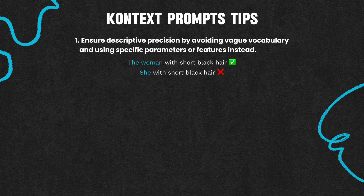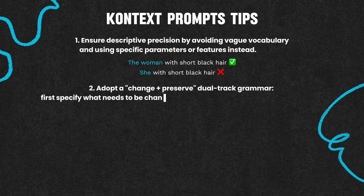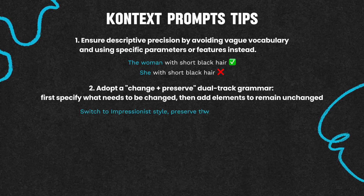Tip 2: Adopt a change-plus-preserve dual-track grammar. First specify what needs to be changed, then add elements to remain unchanged. For instance: "switch to impressionist style, preserve the figure's dynamic posture".